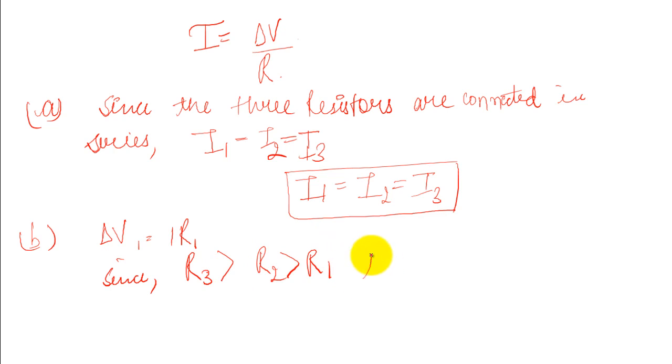The ranking is delta V3 greater than delta V2 greater than delta V1. Therefore, the order of the potential difference from largest to smallest is delta V3 greater than delta V2 greater than delta V1.